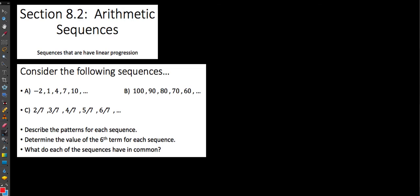We're going to be looking at sequences that basically have what we refer to as a linear progression. That is to say, if we were to graph it, it would be a straight line progression. I want you to consider these sequences — I've given the first five terms of each of these sequences.